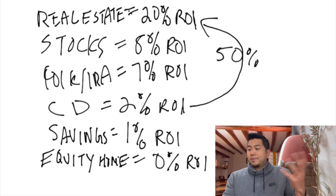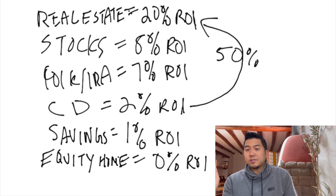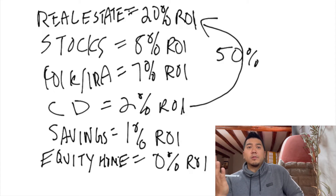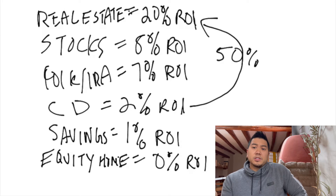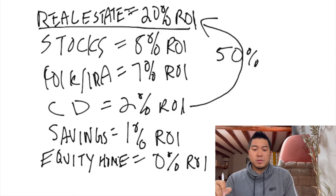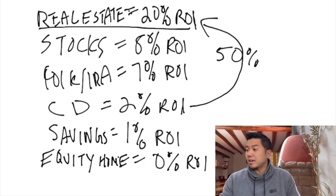Now that we understand the first theory — moving from lower ROIs to higher ROIs — the second step is what most people know me for: real estate investing. I'm going to talk about real estate right here and explain this 20% ROI and how we calculate that in real estate. Let's go to the next page.